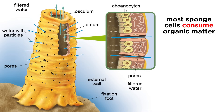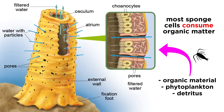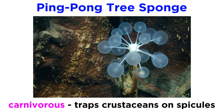Something fascinating about sponges is that since they lack any true digestive system, almost every one of their cells consumes organic matter. As water flows into their bodies, any tiny organic material such as phytoplankton and detritus trapped by a part of the sponge is consumed. This is a type of filter feeding, since sponges only consume organic material suspended in the water column. However, there are carnivorous sponges, like the ping pong tree sponge, which uses tiny hooked spicules to capture small crustaceans and slowly digest them alive.